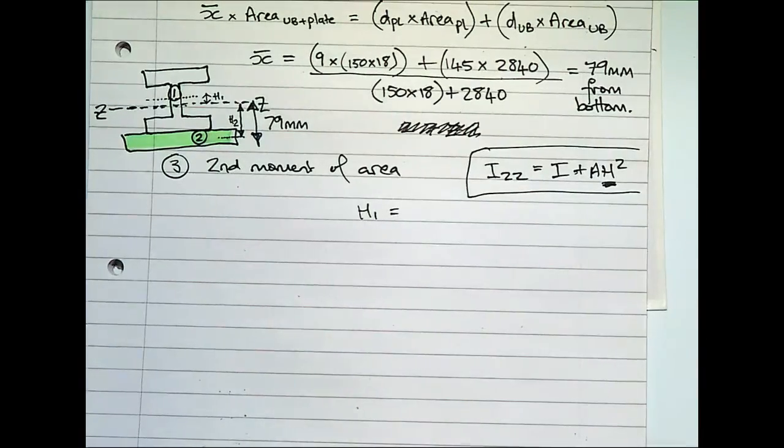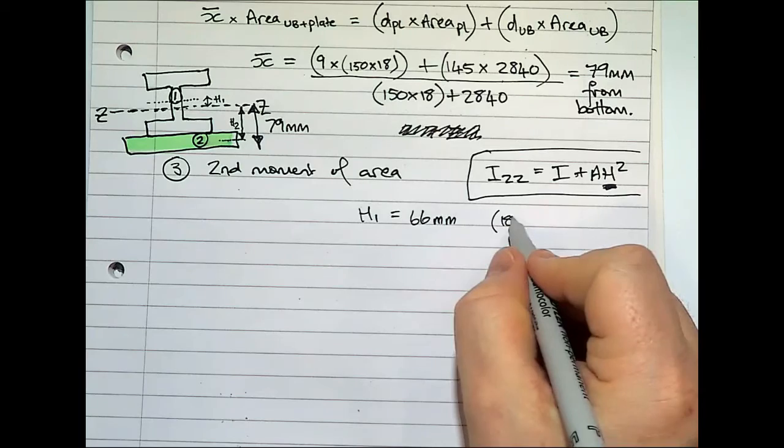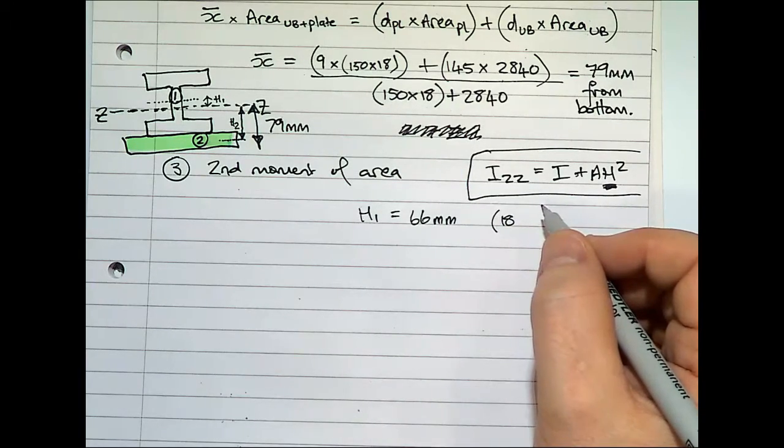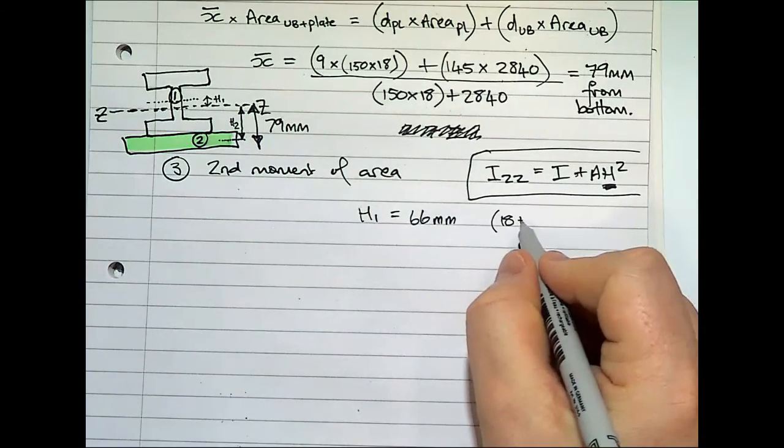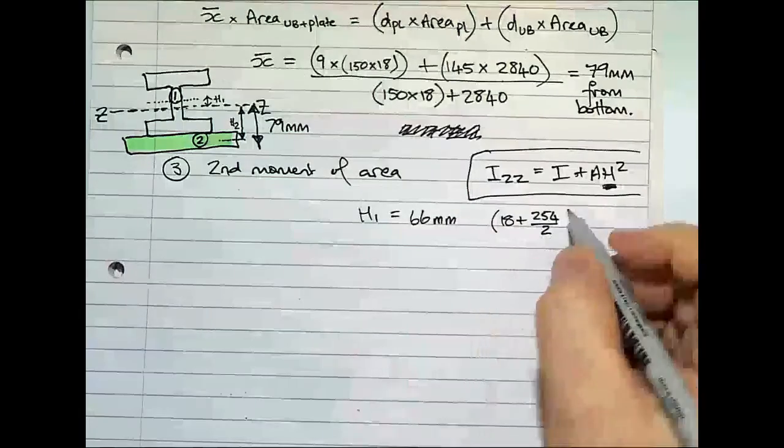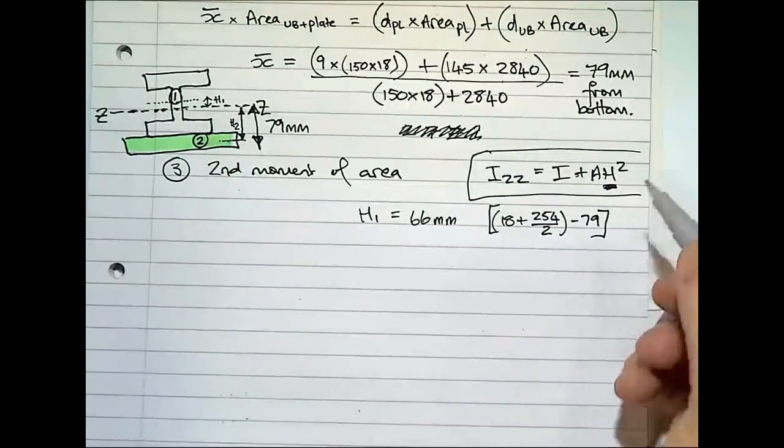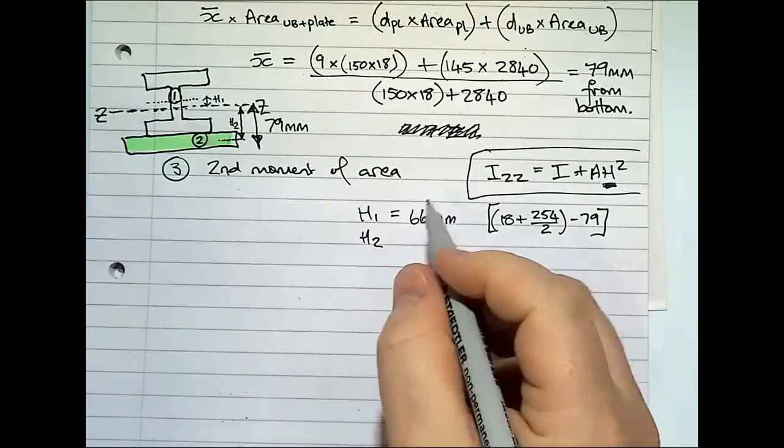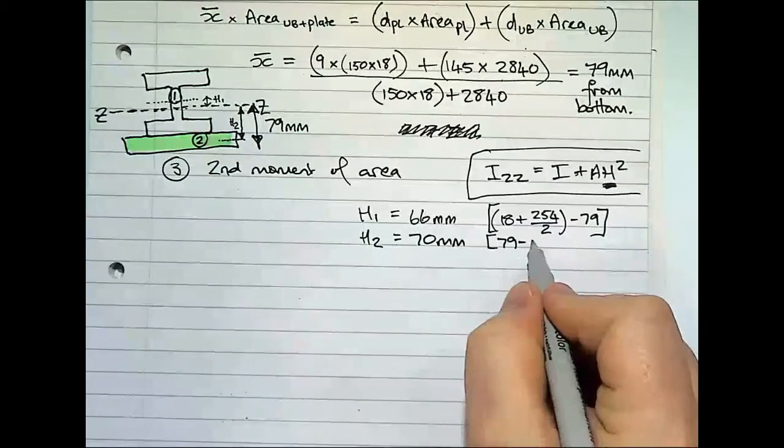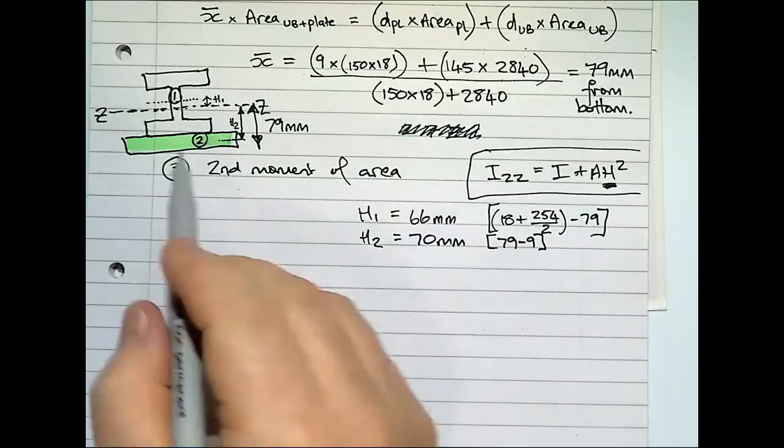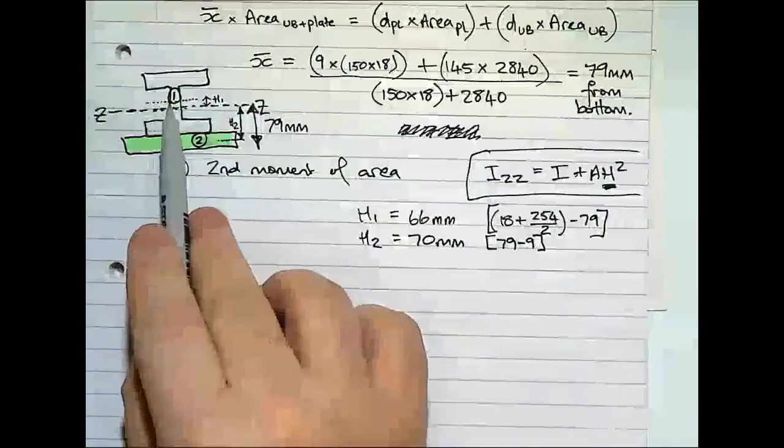h2, so you work this out with dimensions of the compound section. h1 is 66 millimeters. h2, if you look at the dimensions, it's 70 millimeters. That's 79 take away 9. So please have a look at the dimensions and double check that you can see how we get the distances from ZZ to the middle of each of the items.